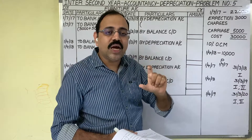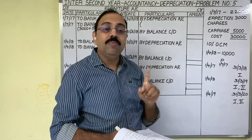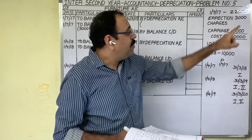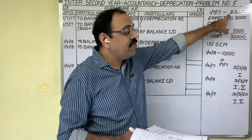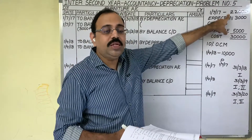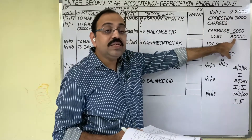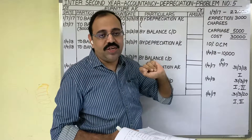The total erection charges are 3,000 plus 5,000 equals 8,000 rupees. Adding the purchase price of 22,000, the total cost of the asset is 30,000 rupees.